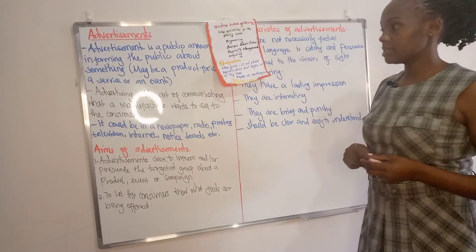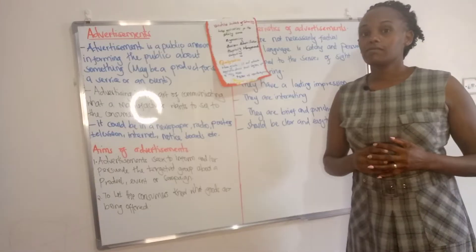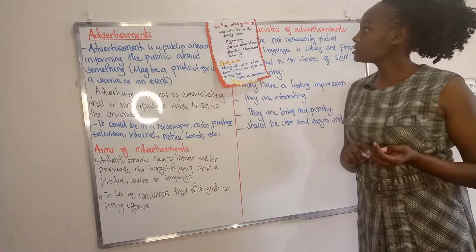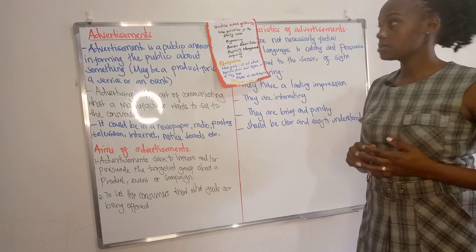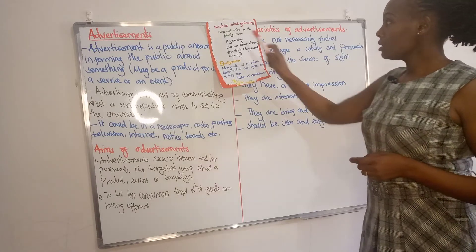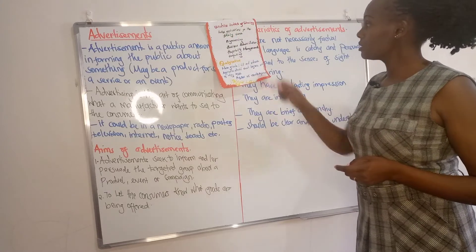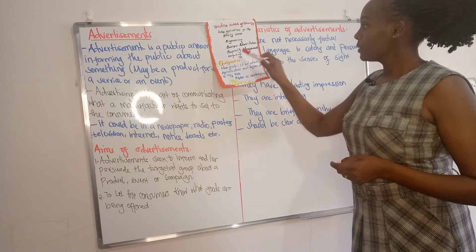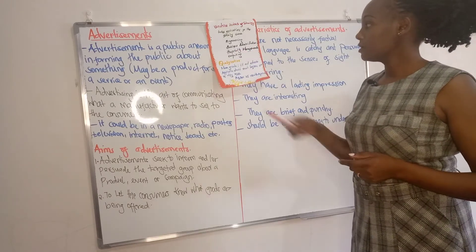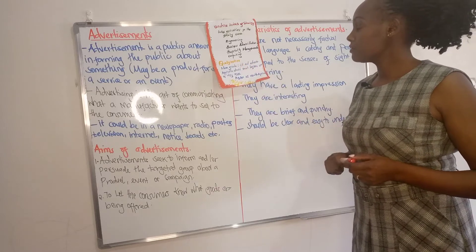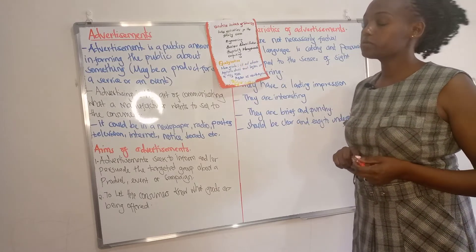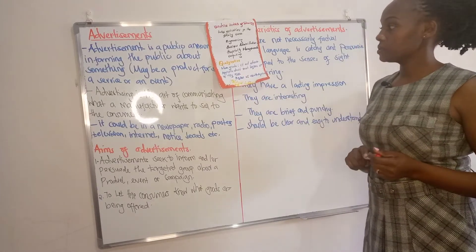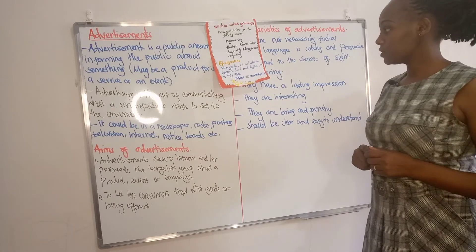Let us look at a sample advertisement. We are going to look at an advertisement for a certain school — the Sunshine Institute of Technology in South Africa, just an example. It invites applicants for the following courses: Engineering, Business Administration, Hospitality Management, and Computing. The qualifications are a mean grade of C plus and above. Applications should reach the office before 2nd May 2022, and it is for qualified candidates only.